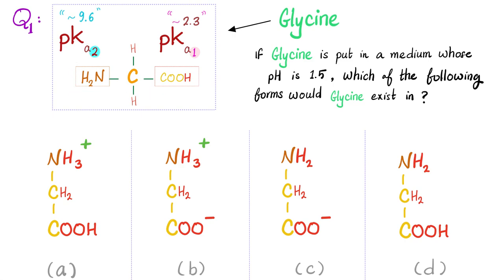First question is here. Here is glycine and the pKa1 for this group is this number. The pKa2 for this group is this number. If I put this glycine in a medium whose pH is only 1.5, which of the following forms would glycine exist in? This form, this form, this form, or this form? Please pause.